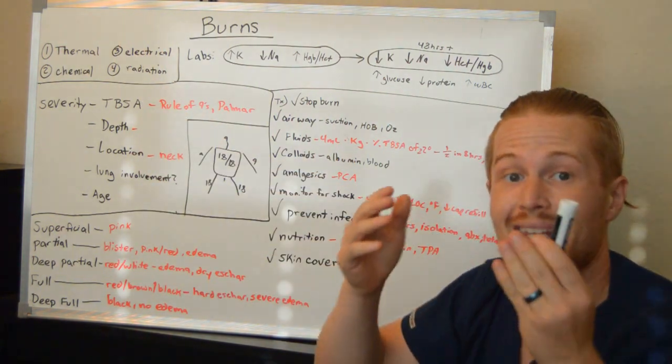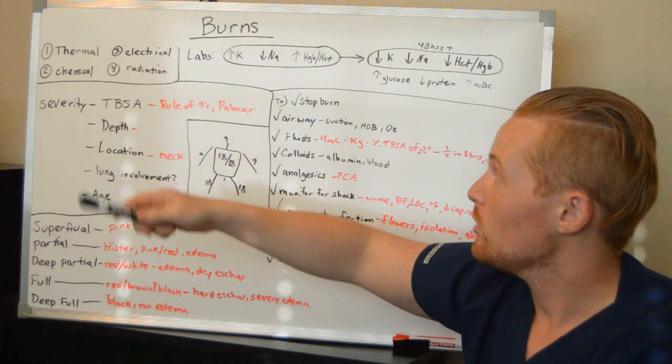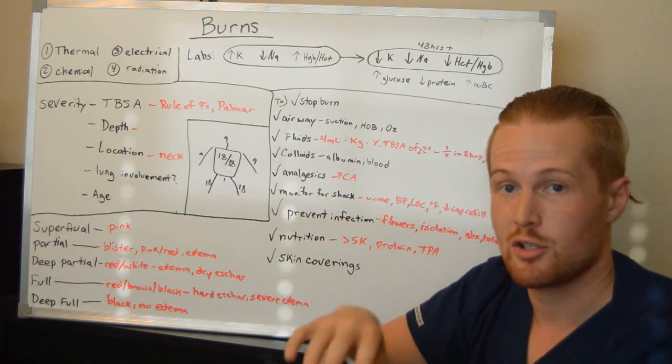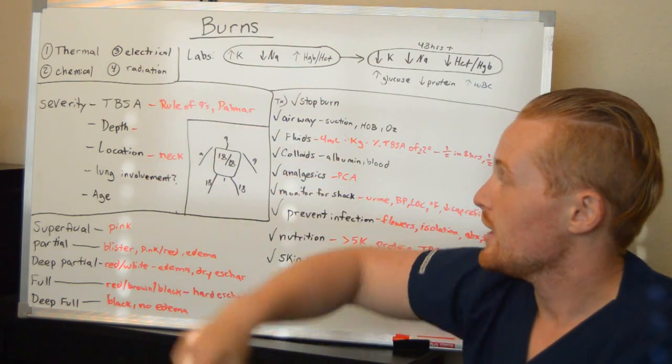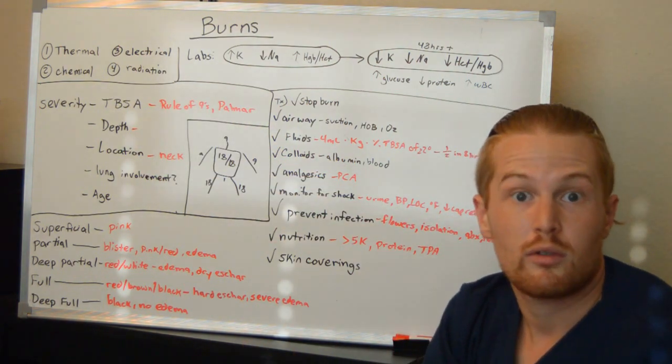Burns come in four different types. You've got thermal burns, which are due to heat. You've got chemical, which has to do with chemicals that are damaging to the skin. Electrical, due to electrical shock. And radiation, due to some sort of cause of radiation.